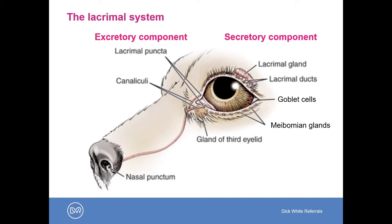On the right-hand side of the diagram, we can see the lacrimal gland, which is located in the dorsolateral orbit and distributes its tears via several lacrimal ducts into the dorsal conjunctival fornix. The goblet cells are distributed across the entire conjunctival surface and produce the mucin, and the meibomian glands are present along the eyelid margins producing the lipid.